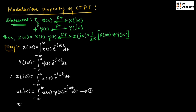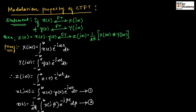Using inverse Fourier transform, we can write X(t) is equal to 1 by 2π integration of minus infinity to infinity X(jβ) exponential to the power of minus jβt dβ. So, in place of ω, we have written β here. Let us call this as equation number 2.